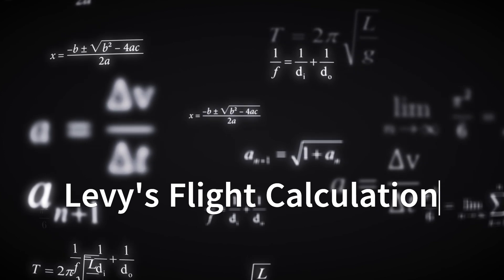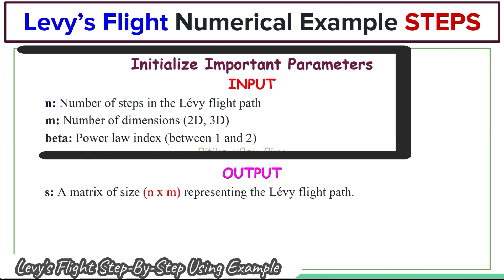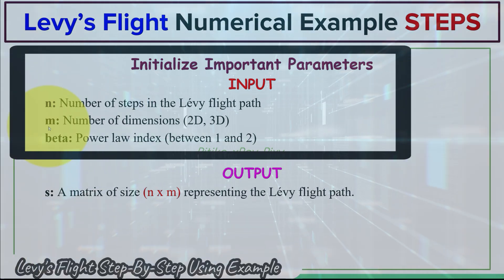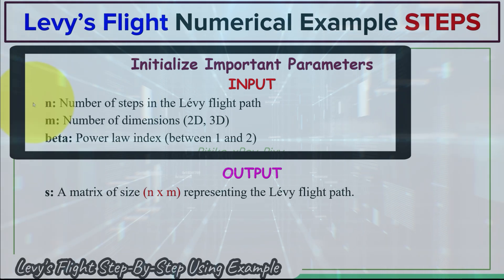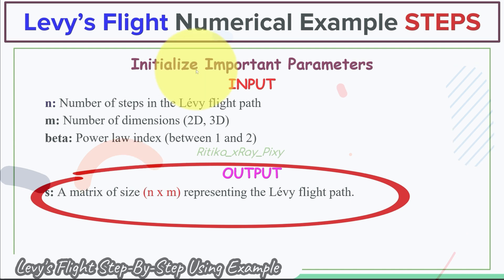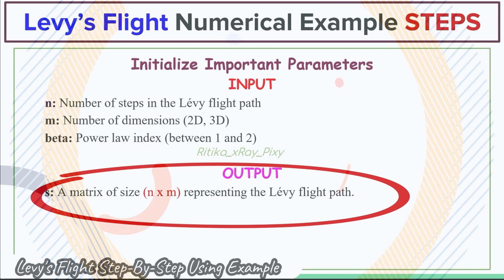Now we will understand how to calculate Lévy's flight using a numerical example. First we initialize the important parameters. The input parameters are: small n, the number of steps we will take in the Lévy flight path; small m, the number of dimensions — for example 2D, 3D, etc.; and beta, the power law index controlling step size distribution, with value between one and two. The output parameter is small s, the final calculated step size.